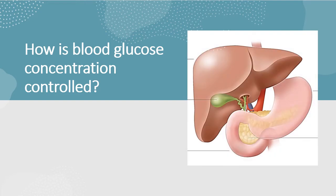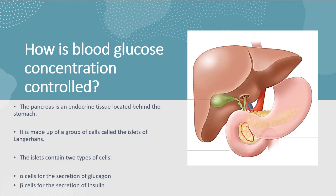Now let's look at the basics of how blood glucose concentration is controlled. We have a very important structure called the pancreas — this yellowish structure here. The pancreas is an endocrine tissue involved in hormone secretion, and it is made up of a group of cells called the islets of Langerhans. These islets have two types of cells: the alpha cells that secrete glucagon and the beta cells that secrete insulin.